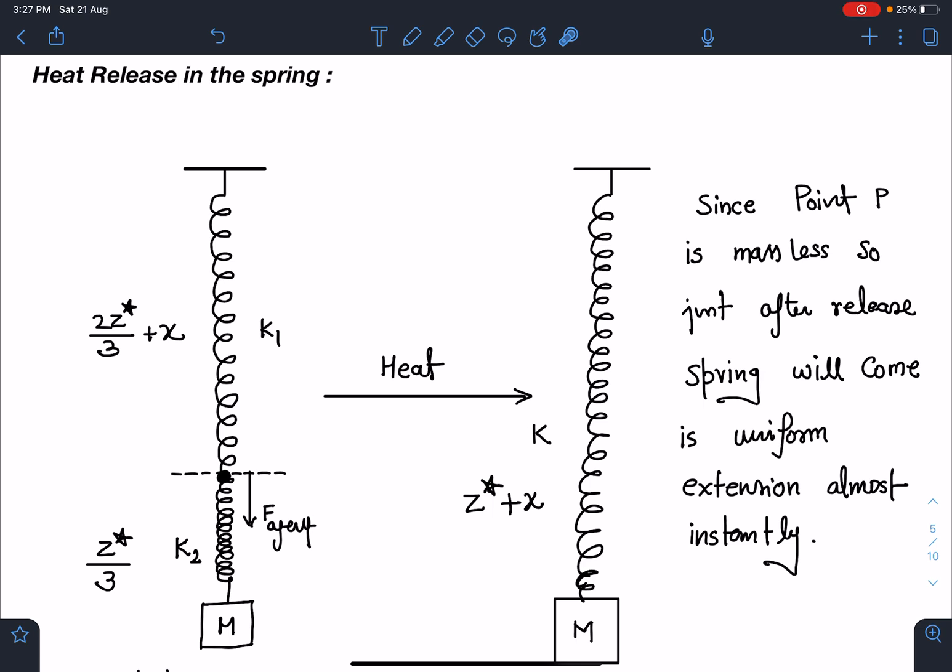Heat will be generated in this case. Almost instantly this spring will have uniform extension throughout the length. The total extension in this part is z* (the initial one) plus extra x which we have given to mass m by pulling it down. Since point P is massless, just after release spring will come to uniform extension almost instantly.